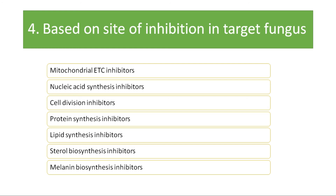In subsequent lectures we will discuss with examples how these groups of fungicides attack different sites in the fungus — which fungicides inhibit the electron transfer chain, which inhibit cell division, and sterol biosynthesis inhibitors, known as SBI fungicides, which inhibit sterol biosynthesis. This lecture is basically classifying fungicides on the basis of certain parameters.